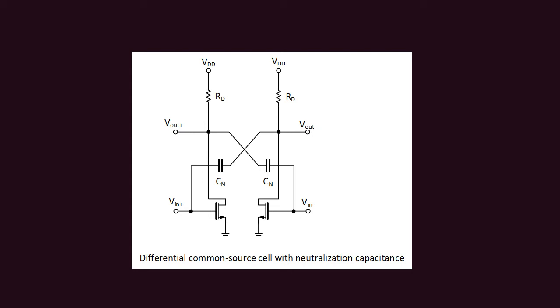What this capacitor effectively does is, since in the differential amplifier the signal is out of phase, an opposite current will flow through this capacitor. As a result, the Cgd will have an opposite current flowing through it. In this way, the effective Cgd will be much reduced because in the Cn neutralization capacitance an opposite current will be flowing.